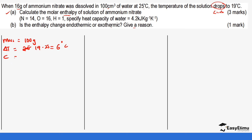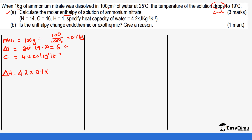The specific heat capacity given is 4.2 kJ/kg/K. This means we need to convert our mass into kilograms: 100 divided by 1000 gives 0.1 kg. So the heat change is q = mcΔT = 4.2 × 0.1 × 6, which gives us 2.52 kilojoules.